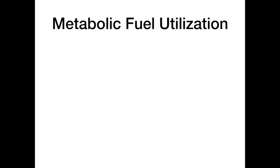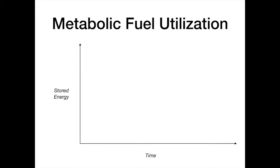Let's get into metabolic fuel utilization. When I use the term metabolic fuel utilization, what I'm referring to is what type of macronutrient or fuel — be it fat, glucose, protein, etc. — is being used at what point during starvation. The best way to approach this topic is to use a graph. On one axis we'll have stored energy — how much energy is stored in the form of things like glycogen, fatty acids, protein, etc. And on the other axis we'll have time, marked in days and weeks.